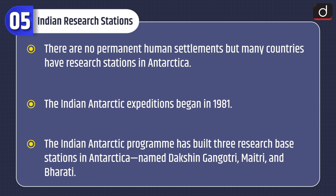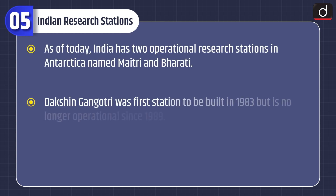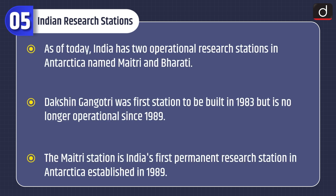There are no permanent human settlements in Antarctica, but many countries have research stations there. India's Antarctic expeditions began in 1981. The Indian Antarctic Program has built three research base stations: Dakshin Gangotri, Maitri, and Bharati. As of today, India has two operational research stations — Maitri and Bharati. Dakshin Gangotri, the first station built in 1983, has not been operational since 1989.